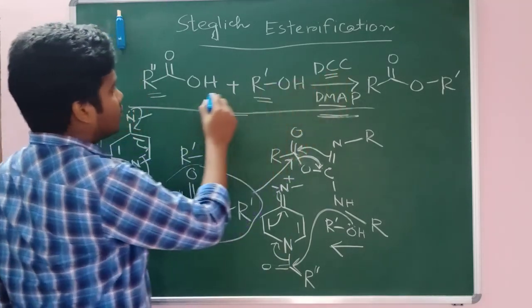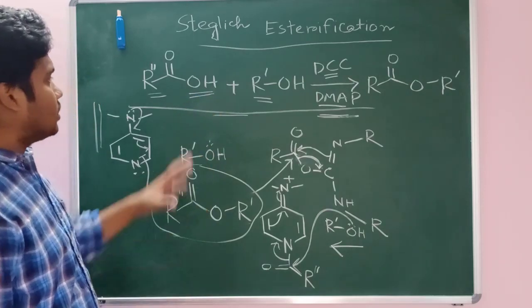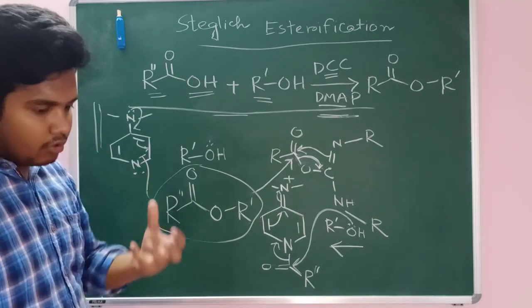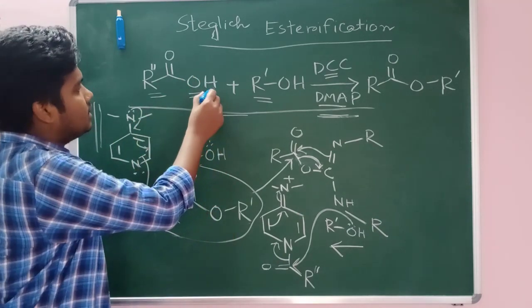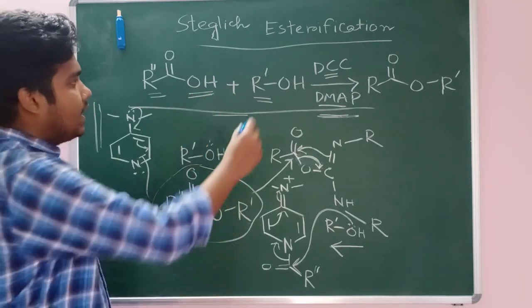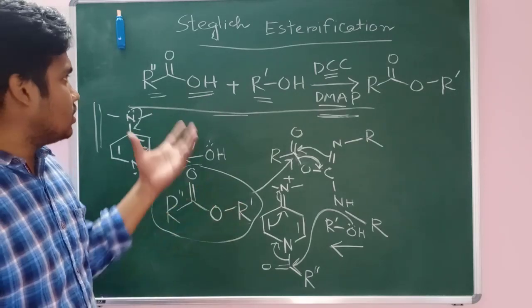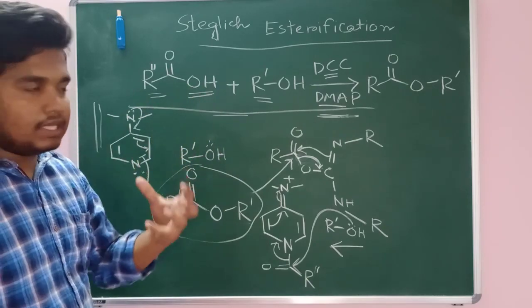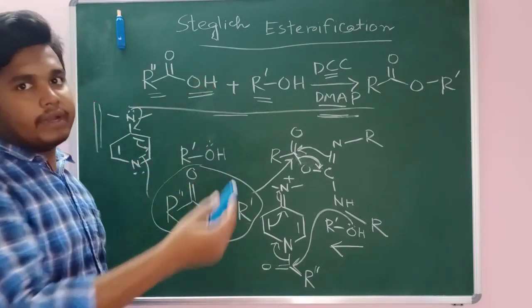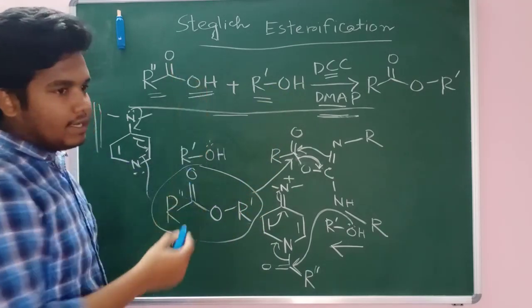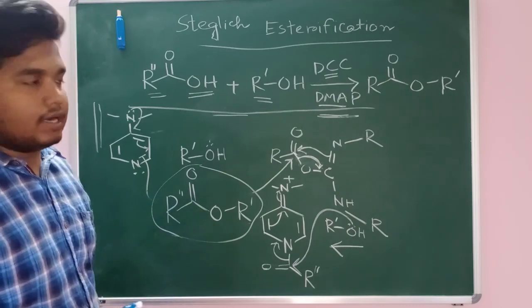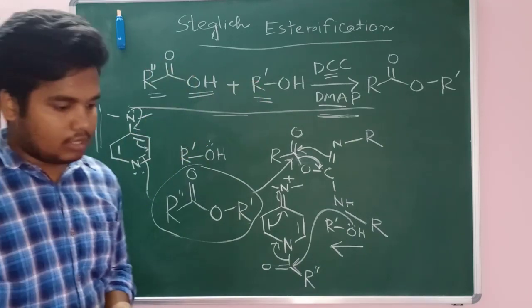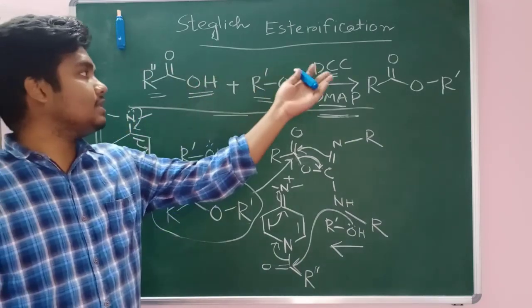Here the role of DCC is to activate this acid, this acid moiety. What we're trying to mean by activate is here you can see no leaving group is present. And if this alcohol attacks, this OH cannot go as it is. So we have to add something that can make this OH to a better leaving group. That time this alcohol will attack in a simpler manner or in an easier manner. So the role of DCC is to activate this carboxylic acid and then this alcohol can attack to this carbon center.